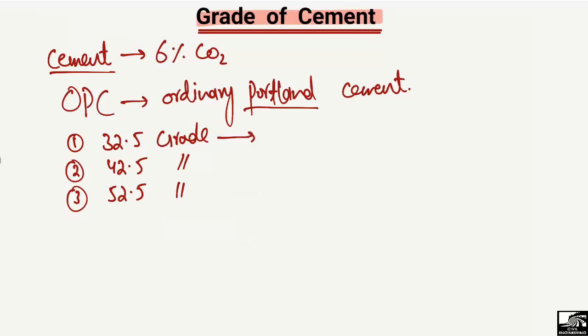It means that this grade of cement has a compressive strength of 32.5 megapascals. If cement achieves a compressive strength of 32.5 megapascals, it is known as 32.5 grade cement.